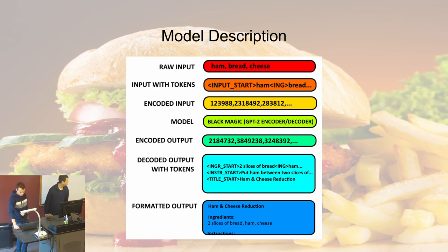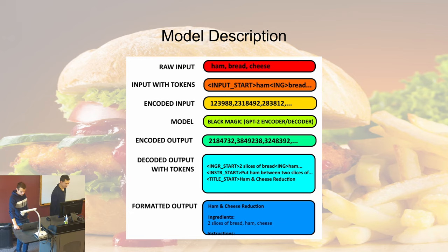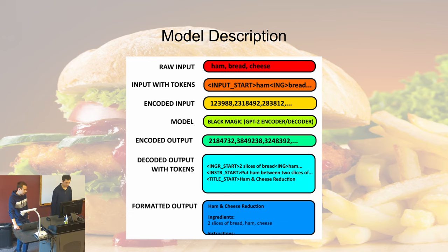To give an overview of the model: we start with a raw input, which is a comma-separated list of ingredients. We then add some special tokens to that input — input start, as well as the IMG tag to separate ingredients. This input is encoded using the Hugging Face GPT-2 tokenizer, which is given to our model that uses a GPT-2 component for encoder and decoder. The output also includes special tags such as tokens for title, instruction start, and separators for instructions. The output is then decoded with the GPT-2 tokenizer and finally formatted, which is part of the demo.